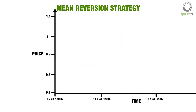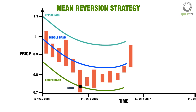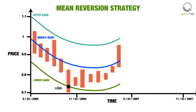We will enter into a long position only when the price falls below the lower band. The price falling below the lower band is used as an indication that the price has deviated significantly from the mean, and hence is expected to rise back to the mean. Then we will exit the long position when the price mean-reverts to the current mean.